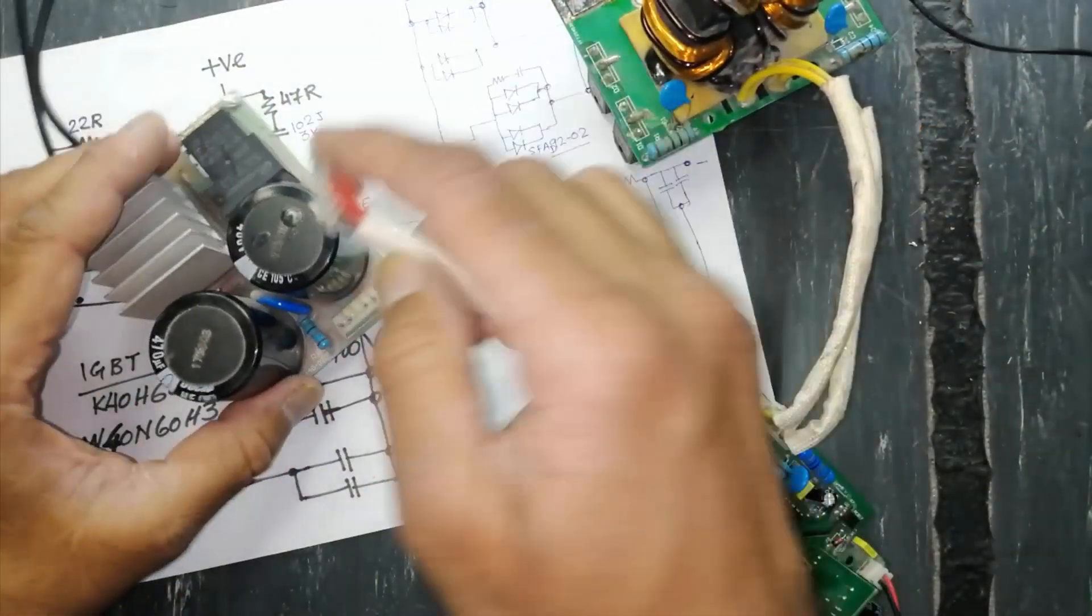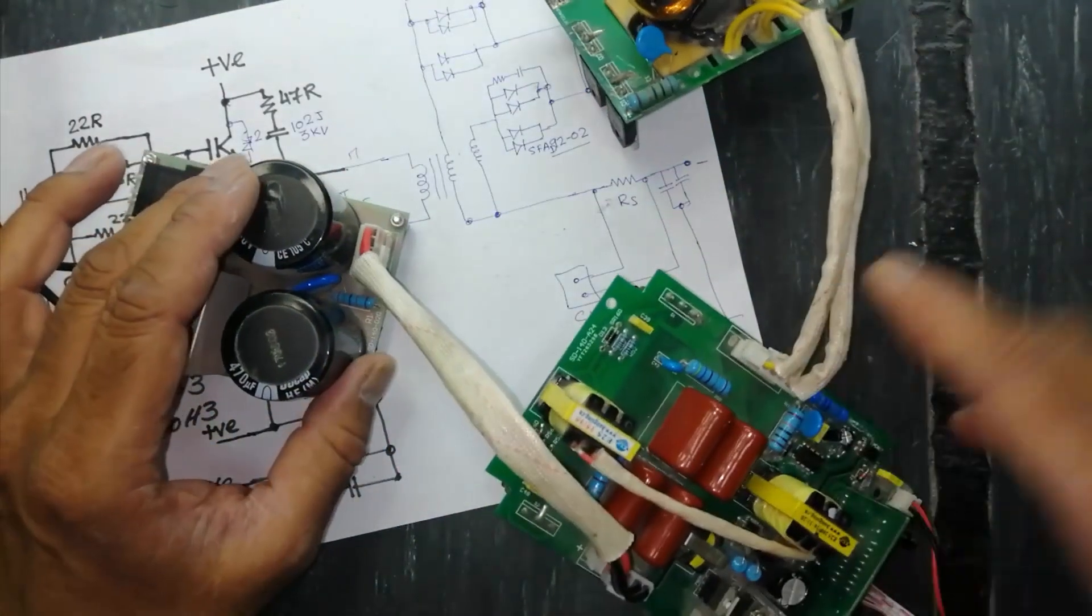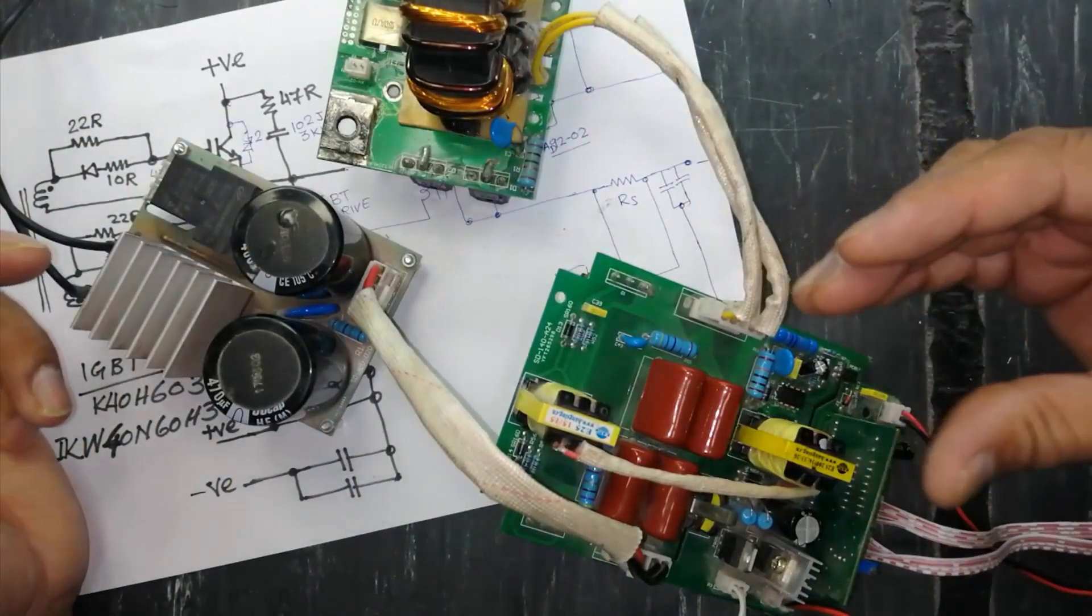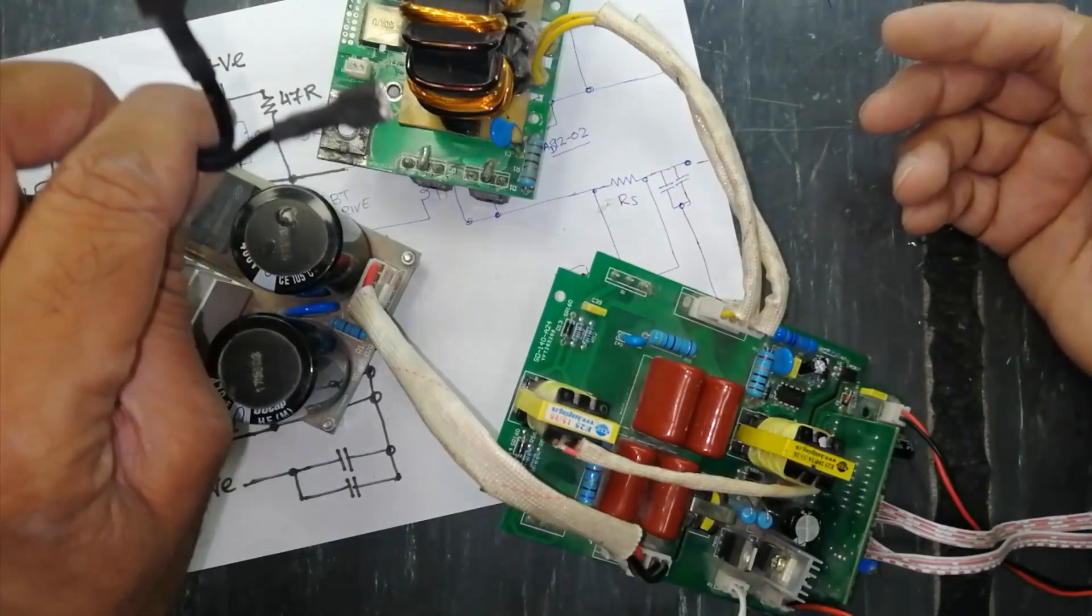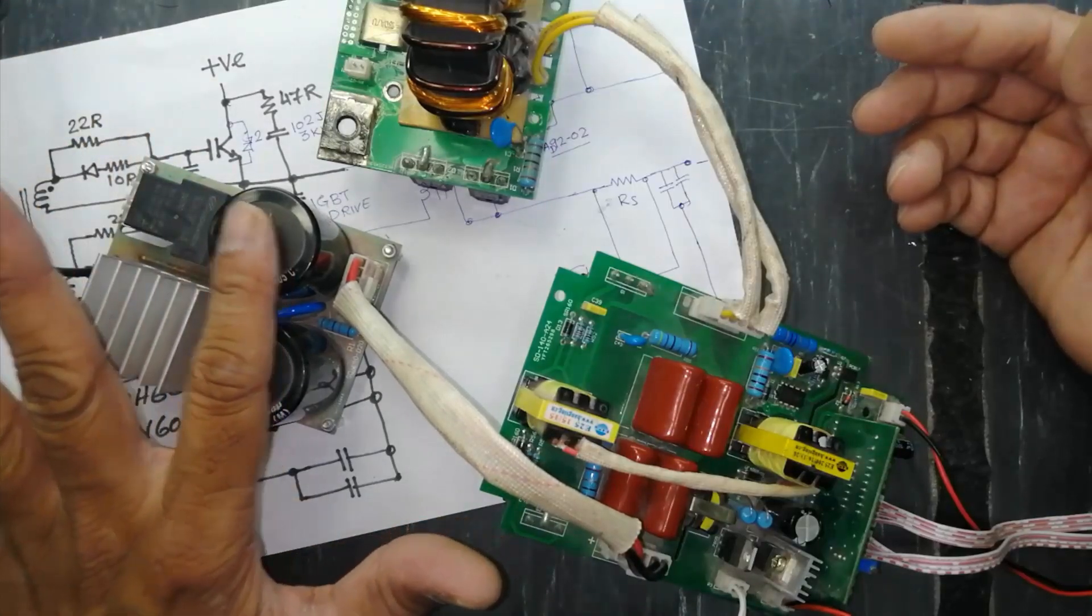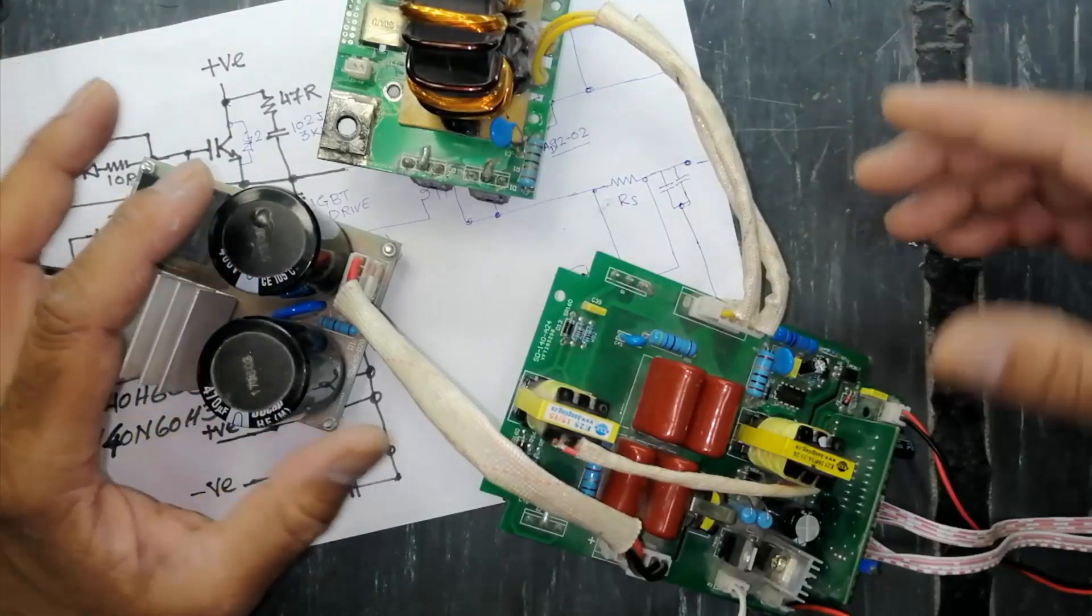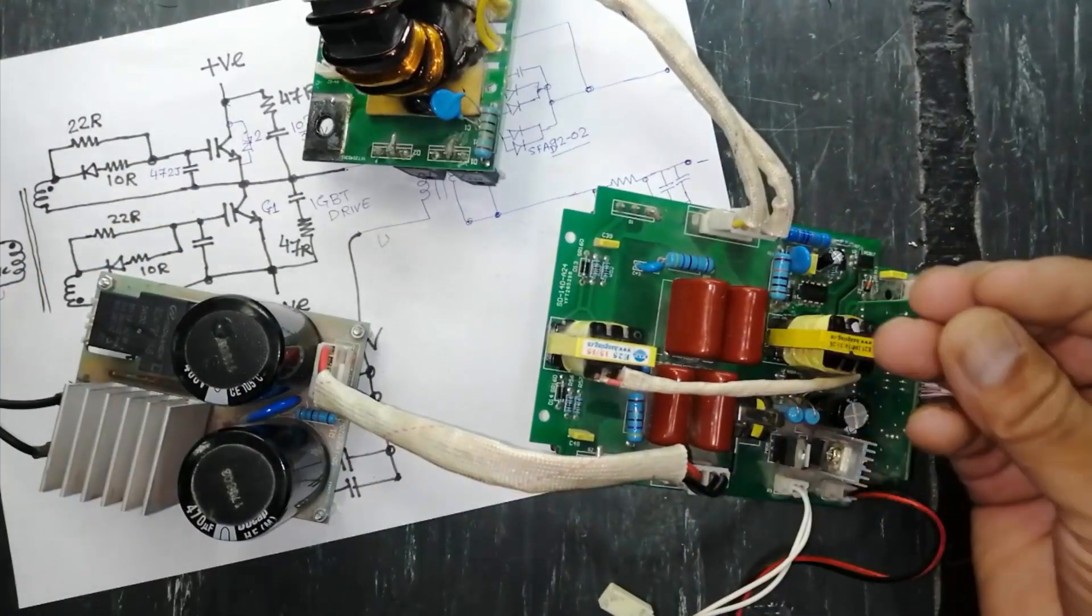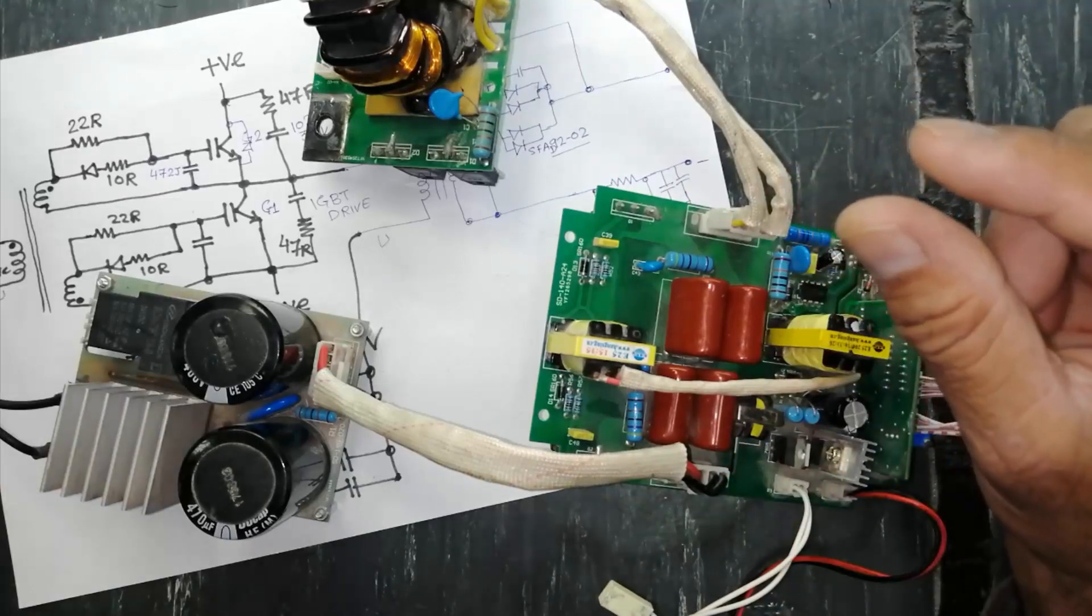If we see it very closely, it is just like a simple mobile charger or simple switch mode power supply. Just the configuration is changed. We are taking AC input from these two points, rectified, stored in the bulk capacitors, two capacitors in parallel, 470 microfarad in parallel.